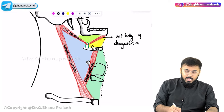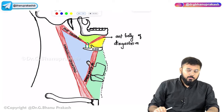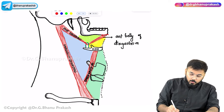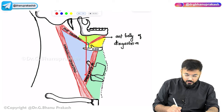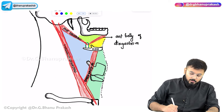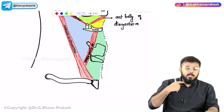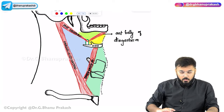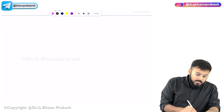The anterior triangle of the neck has three borders: anteriorly — the midline of the neck; superiorly — the inferior surface of the mandible; inferolaterally — the sternocleidomastoid muscle. Within this anterior triangle there are four subdivisions: submandibular triangle, carotid triangle, submental triangle, and muscular triangle.